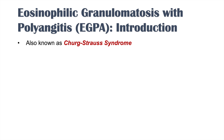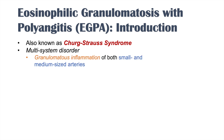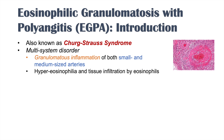EGPA is a vasculitis, also known as Churg-Strauss syndrome. It is a multi-system disorder affecting many different organs, causing granulomatous inflammation of both small and medium-sized vessels. Because it affects small and medium-sized arteries, that's why it's multi-system — wherever those vessels are, that's where it will have effects. Key to this condition is hyper-eosinophilia: very high levels of eosinophils with infiltration into different tissues in the body.